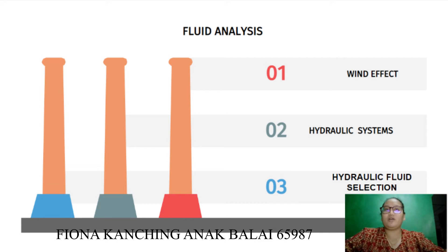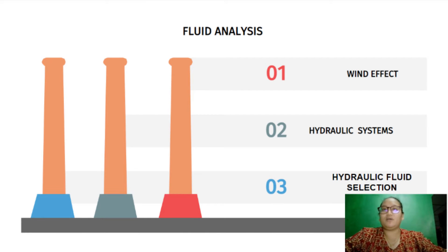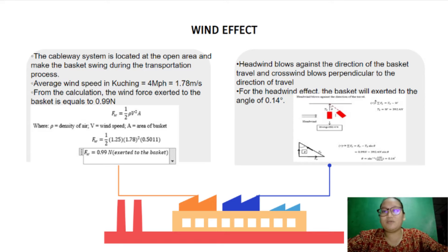My name is Fernakan Cian Balan, metric number 6597. I will explain fleet analysis and thermodynamic analysis. For fleet analysis, I will cover wind effect, hydraulic system, and hydraulic fluid selection. The cableway system is located in an open area, which causes the basket to swing during transportation. The average wind speed in the region is 4 mph, and from the calculation, the wind force exerted on the basket is equal to 0.99 Newtons.